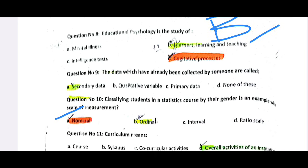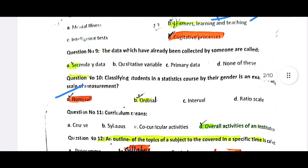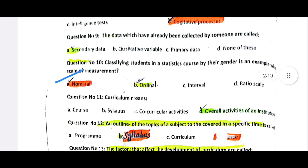Data which has already been collected by someone is called secondary data. When you have gender as a variable, this is nominal data, and order would be ordinal data.